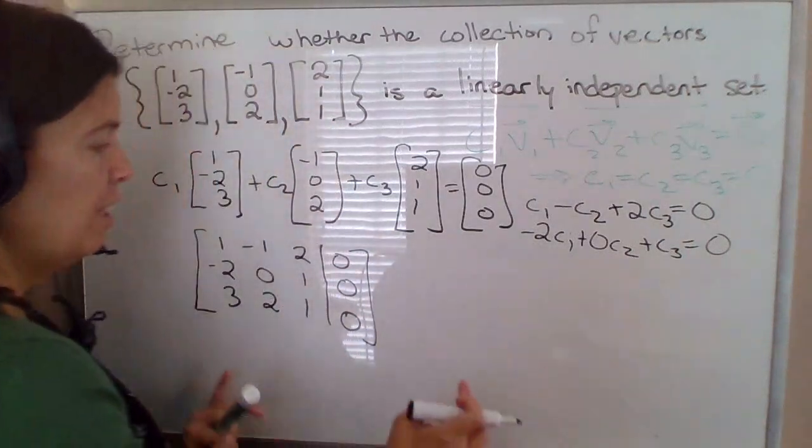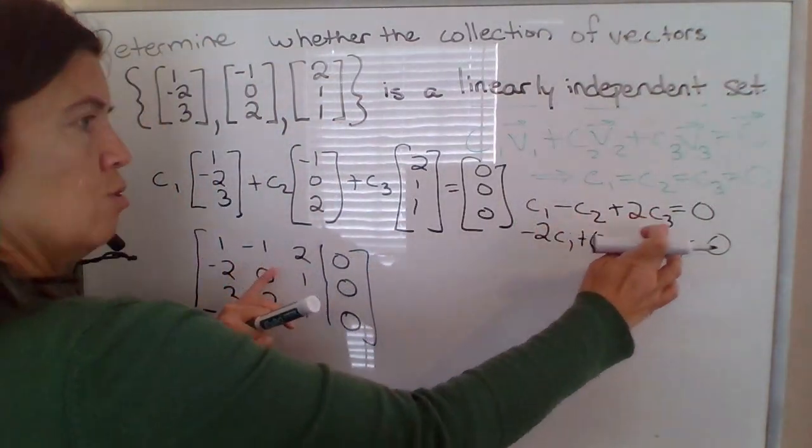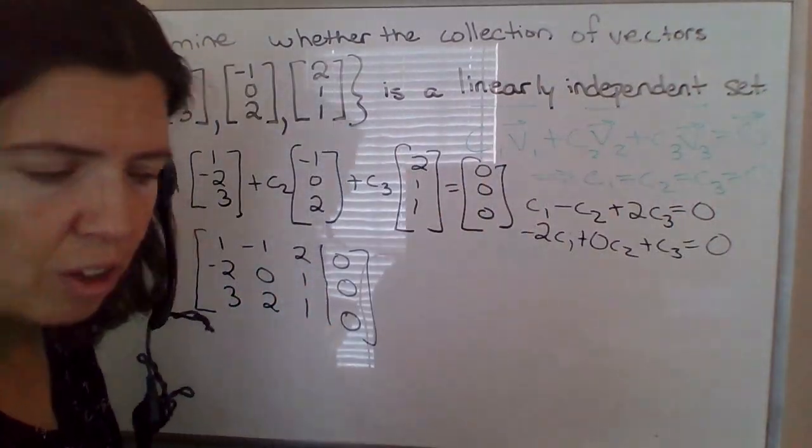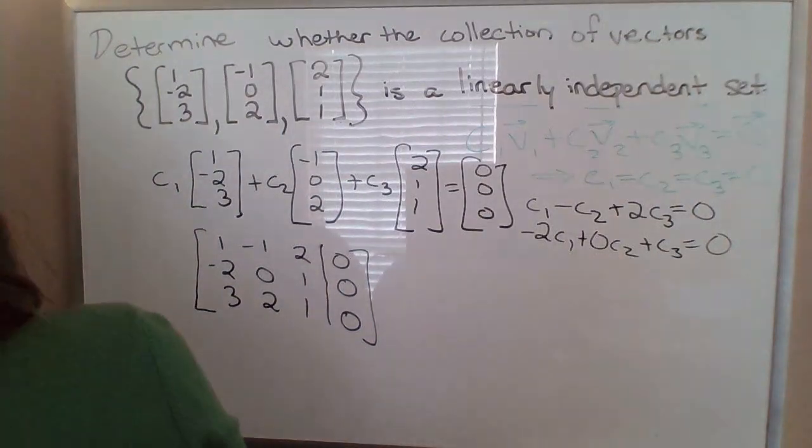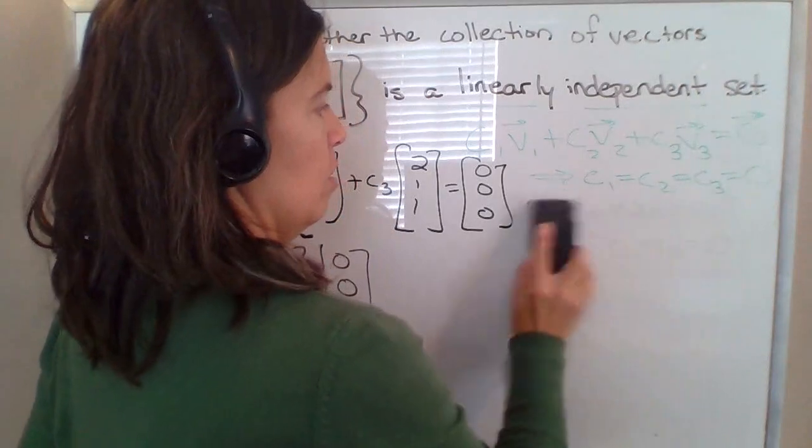But so then that system of linear equations could be represented. You can kind of see that first row: 1, negative 1, 2, 0. Negative 2, 0, 1, 0. So just to give you a little background on why we can go from this equation to this augmented matrix.